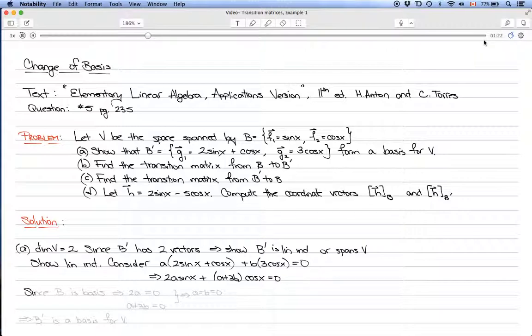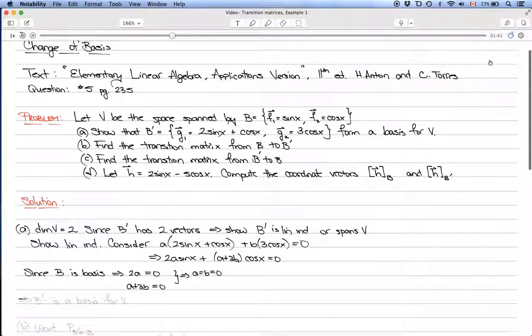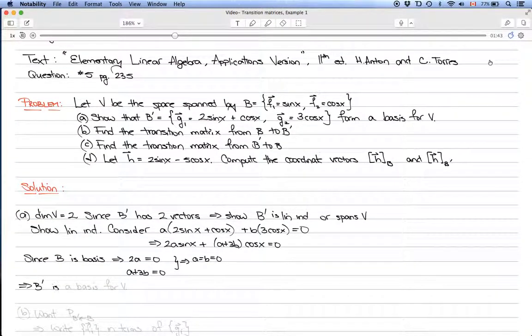Rearranging implies that 2a sin x plus (a plus 3b) cos x equals 0. Since B is a basis, we know that sin x and cos x are linearly independent, which means that 2a equals 0 and a plus 3b equals 0. These both imply that a equals b equals 0. So we've shown that B prime is a basis for V.